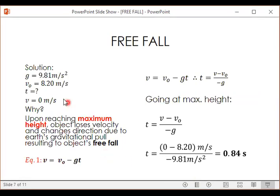So for our solution, let's write the given. We have 9.81 meters per second squared for g. For v₀, we have 8.20 meters per second. So we need to find t. And then you can see our final velocity is 0.